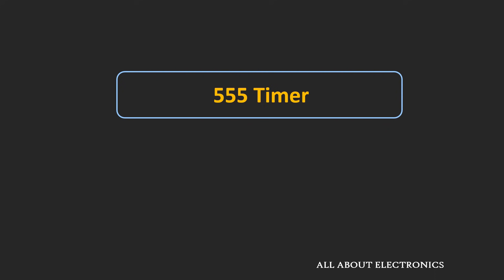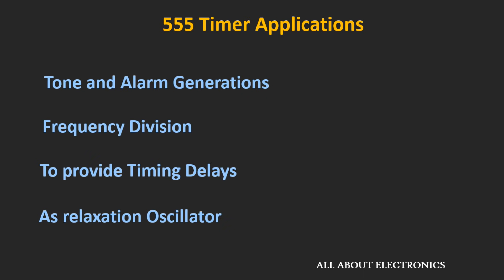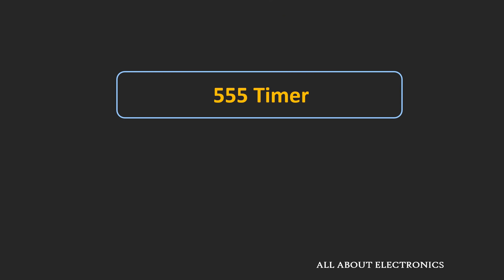This 555 timer IC is a very popular IC and it is very useful in timing related applications. For example, whenever it is used as a relaxation oscillator, it can be used as a tone generator or alarm generator. It can even be used for frequency division or for generating timing delays. This 555 timer IC is available in many packages, but here we are going to talk about the 8-pin DIP package.